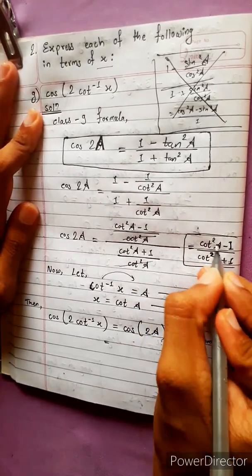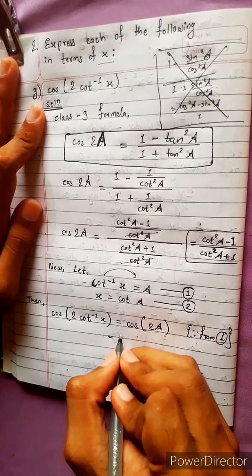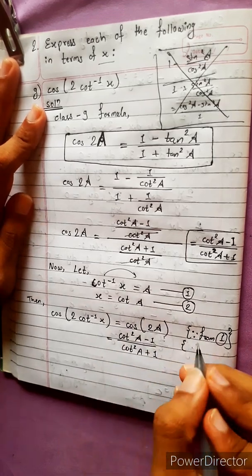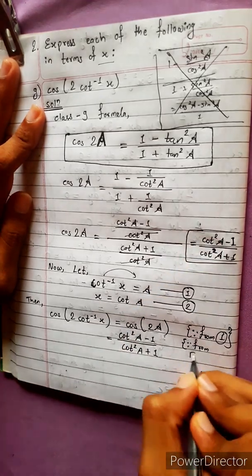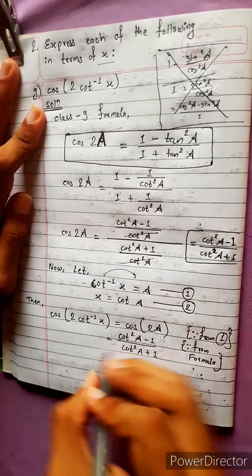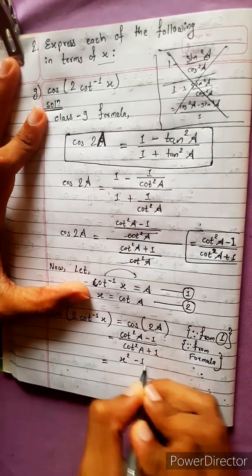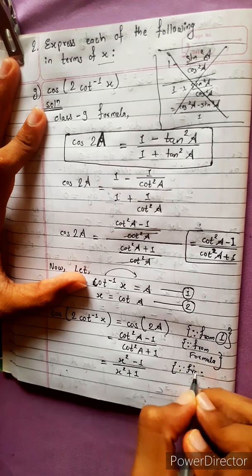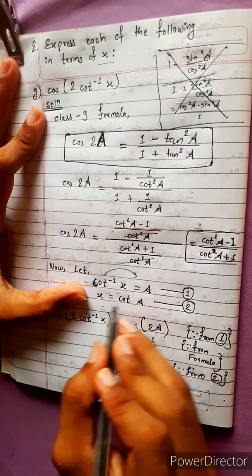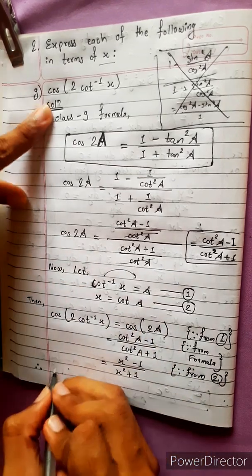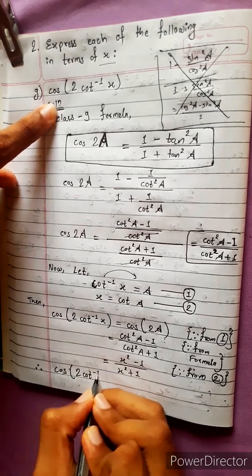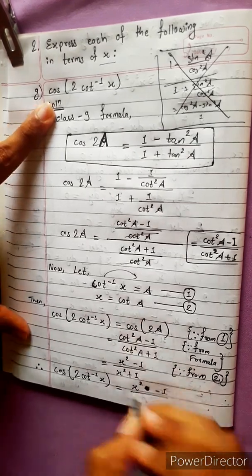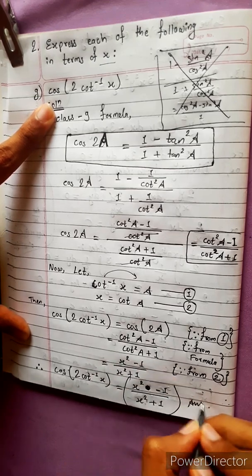In place of cos 2a, we write the formula directly: cot squared a minus 1 divided by cot squared a plus 1. Since cot a equals x from equation 2, cot squared a becomes x squared. Therefore, cos bracket 2 cot inverse x equals x squared minus 1 divided by x squared plus 1. This is our answer.